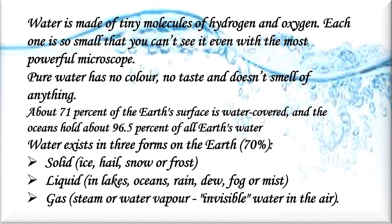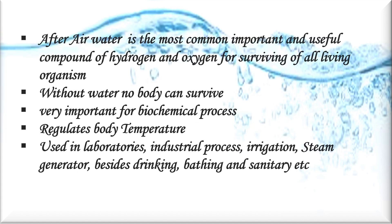Water is made up of tiny molecules of hydrogen and oxygen, and each one is so small that you cannot see it even with the most powerful microscope. Water has no color, no taste, and doesn't smell. About 71 percent of the earth's surface is covered by water, and the oceans hold about 96.5 percent of all earth's water. Water exists in three forms on earth: solid, liquid, and gas.